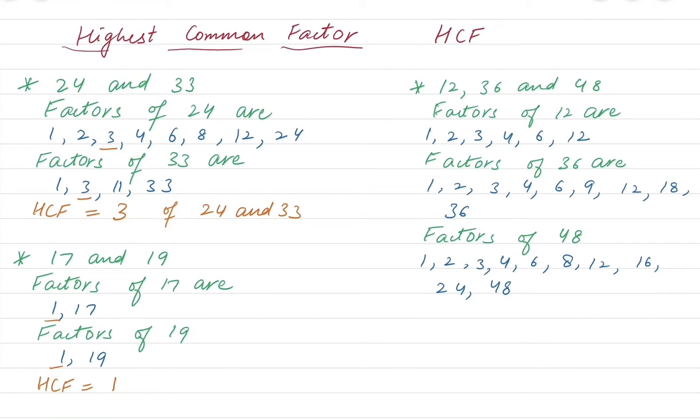Now we can see that 1, 2, 3 and 4 and then 6 are all common. But the highest one is 12. 12 in this one, 12 in 36, similarly 12 in 48 is the highest. Therefore the highest common factor between these three numbers is 12.